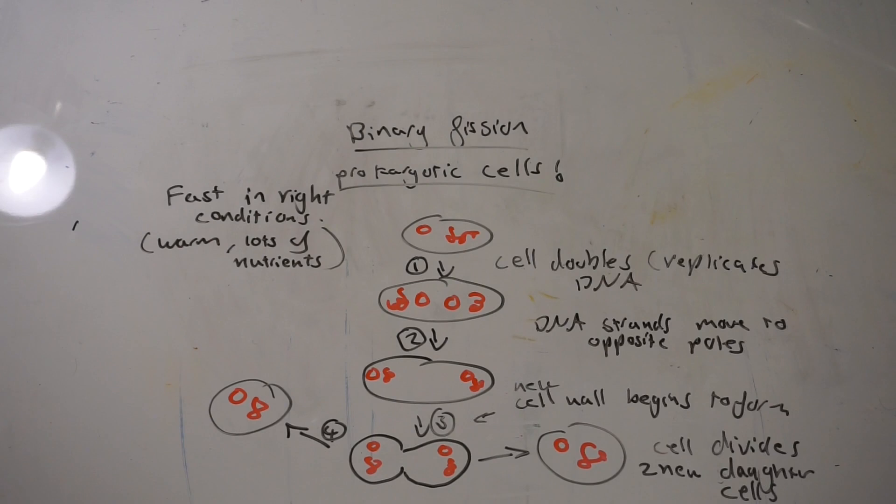Okay, so basically in step one, the circular DNA and also the plasmids that are within the prokaryote replicate. Everything doubles. The cell contents double.